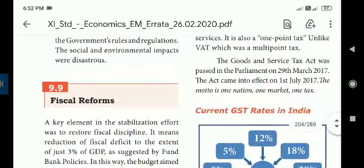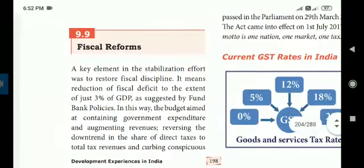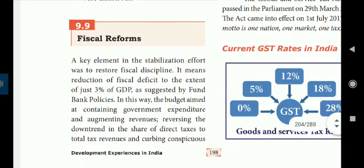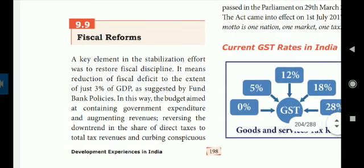Students, we will talk about topic 9.9 — physical (fiscal) reforms, nithi seerthirukthangal. A key element in the stabilization effort was to restore fiscal discipline. It means reduction of the fiscal deficit to the extent of just 3% of GDP.